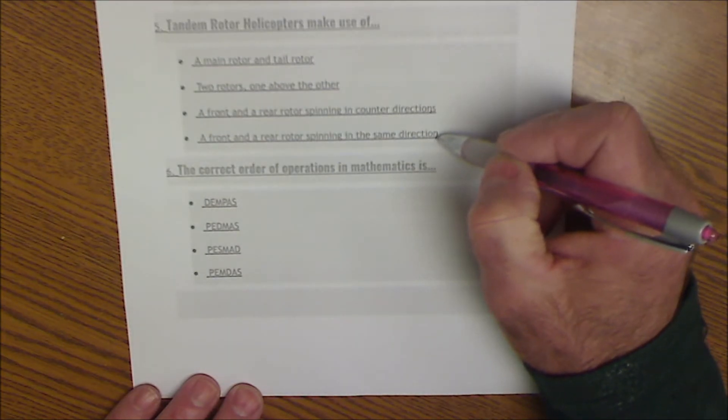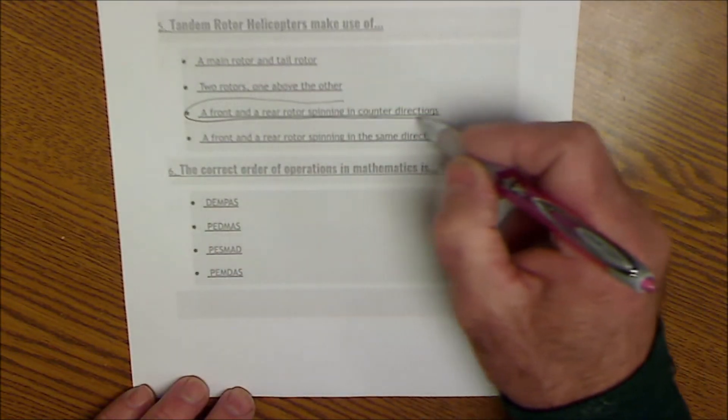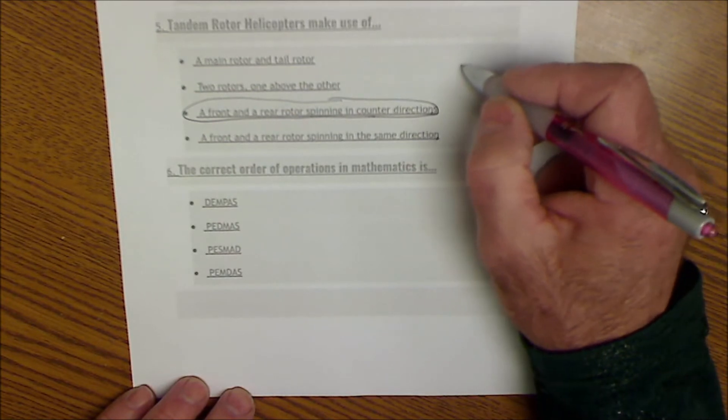A front and rear spinning in the same direction. They have to be counter directions, because it doesn't have a tail rotor, so that's what prevents it from spinning around, right?